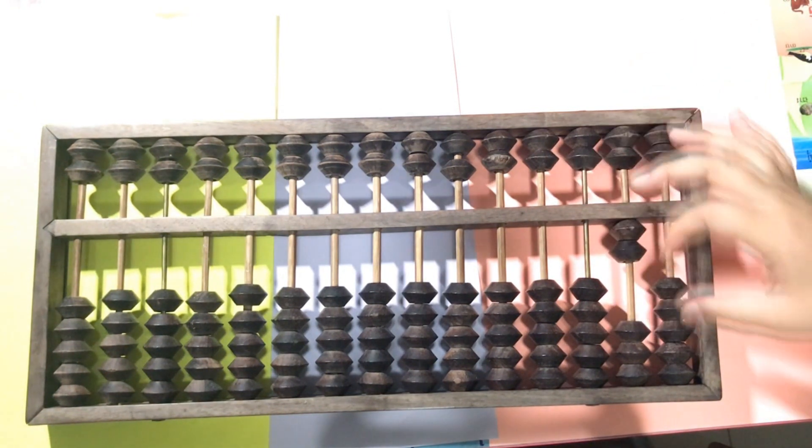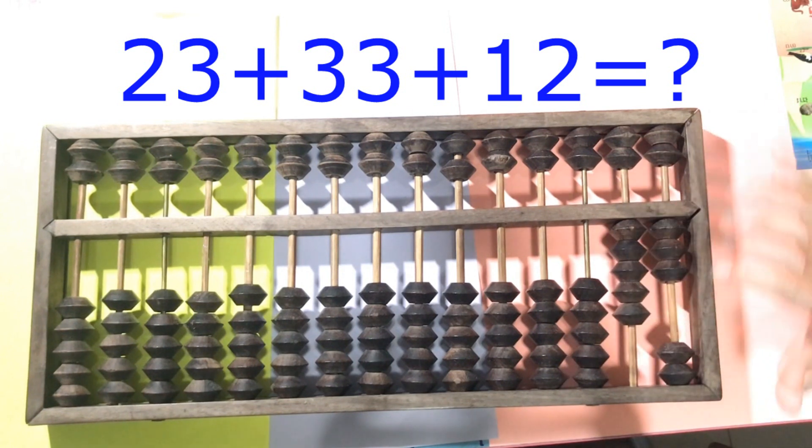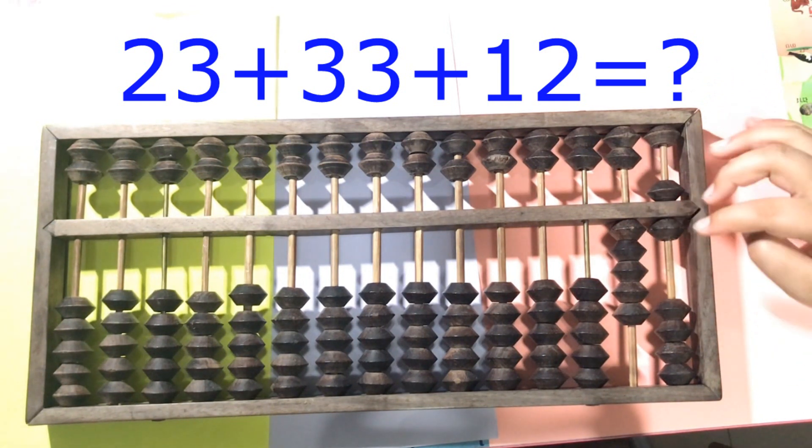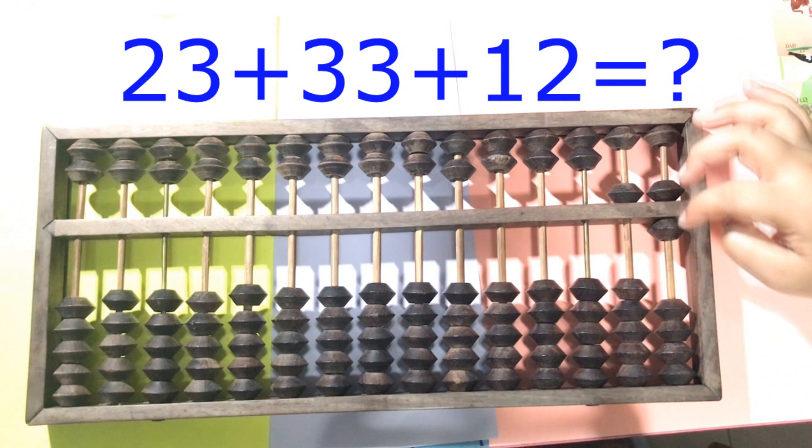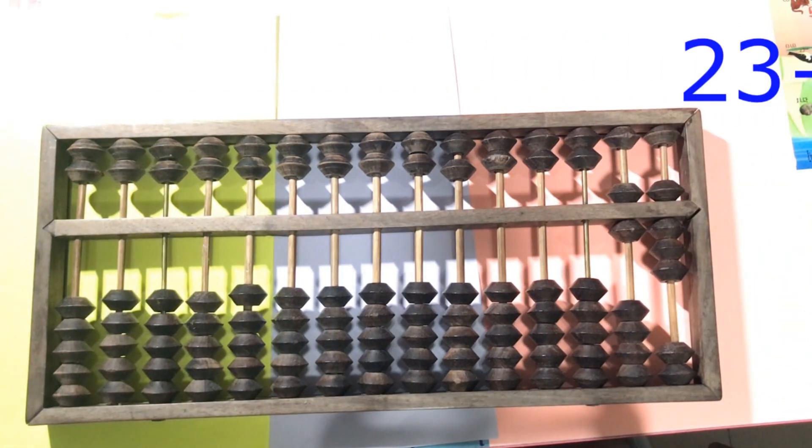The last example: 23 plus 33. We don't have 3 here again. We plus 5 and minus 2. And we plus 12. The answer is 68.